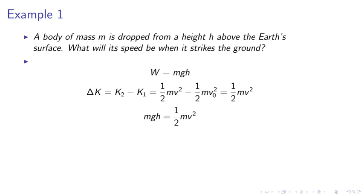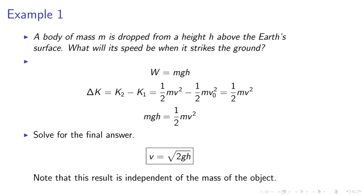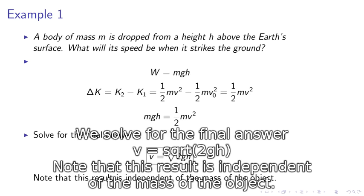We can simply obtain the velocity. We solve for the final answer: v equals the square root of 2gh. Note that this result is independent of the mass of the object.